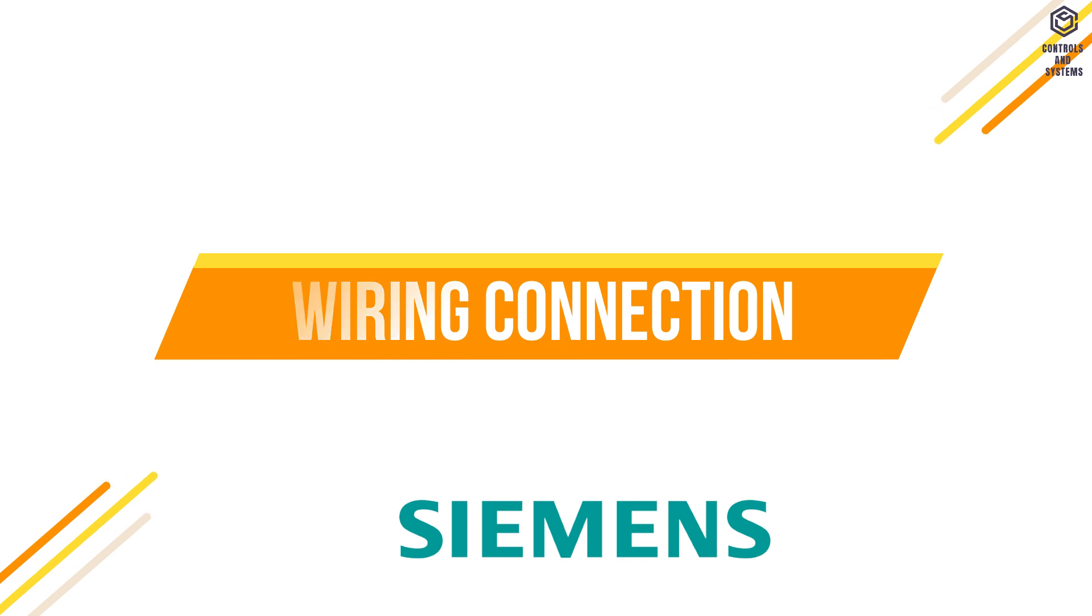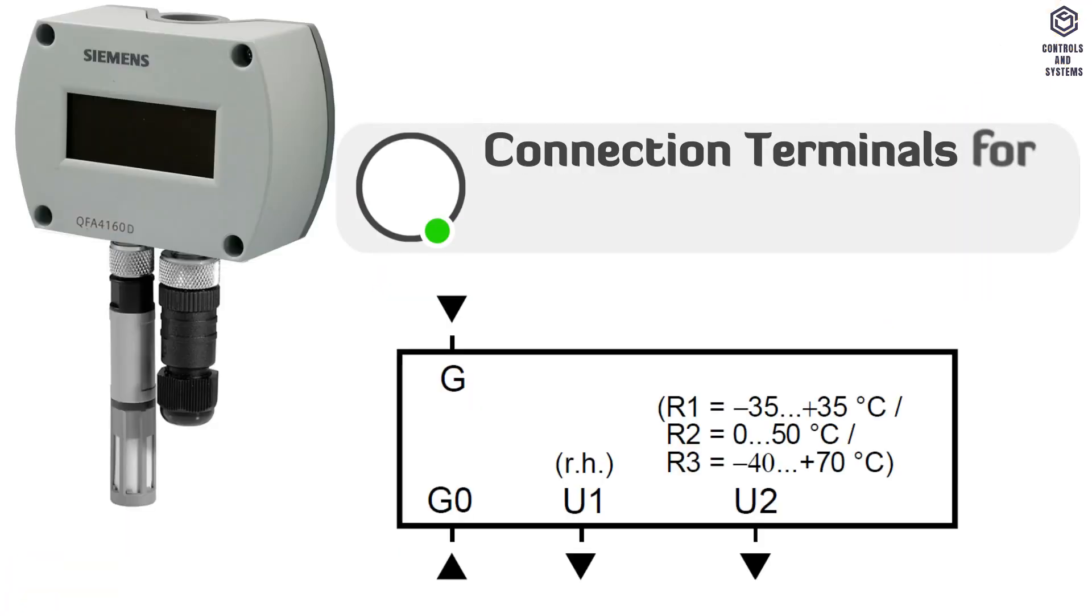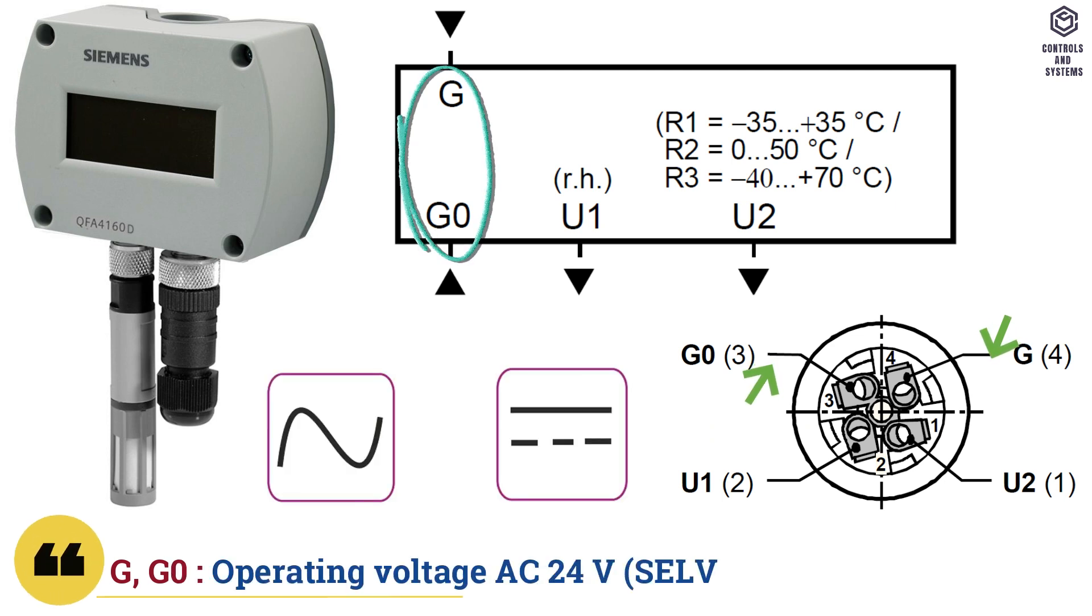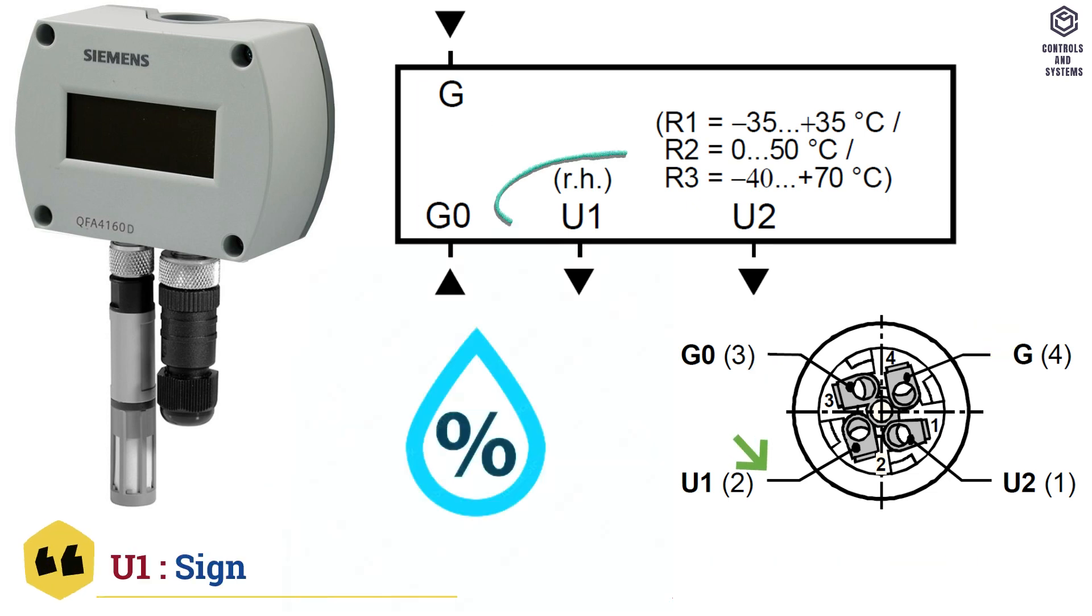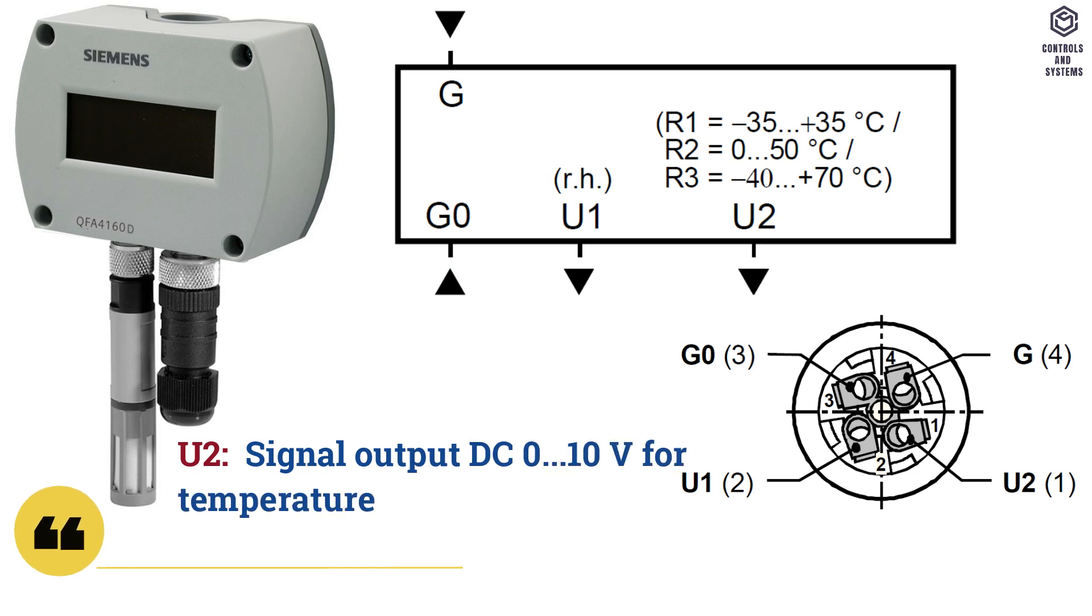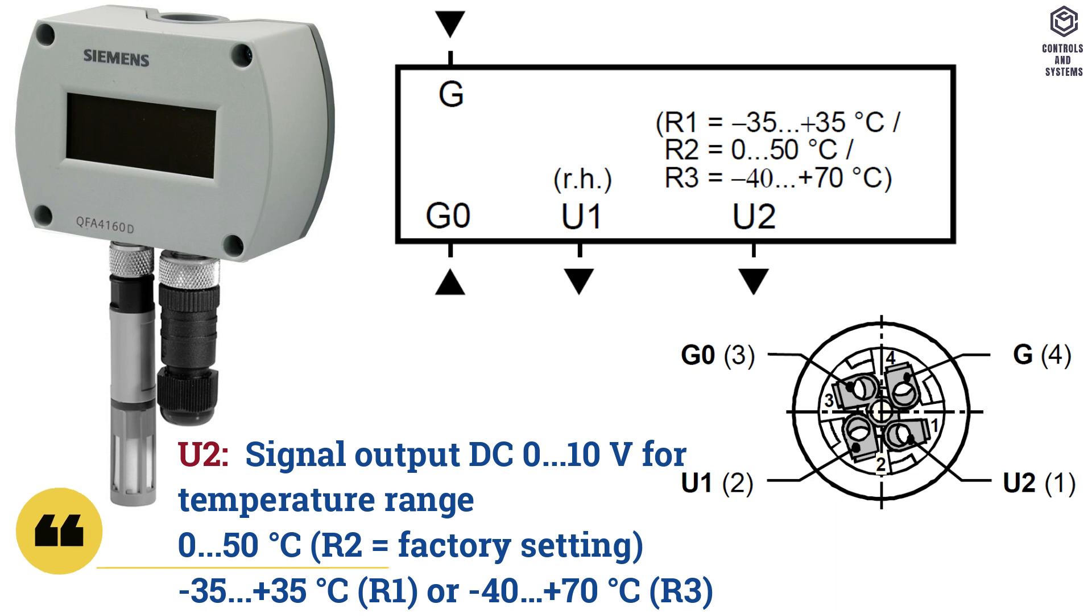Wiring connection. Connection terminals for QFA4160: G and G0 is operating voltage AC 24 volt or DC 13.5 to 35 volt. U1 is signal output DC 0 to 10 volt for relative humidity 0 to 100%. U2 is signal output DC 0 to 10 volt for temperature range 0 to 50 degrees Celsius.